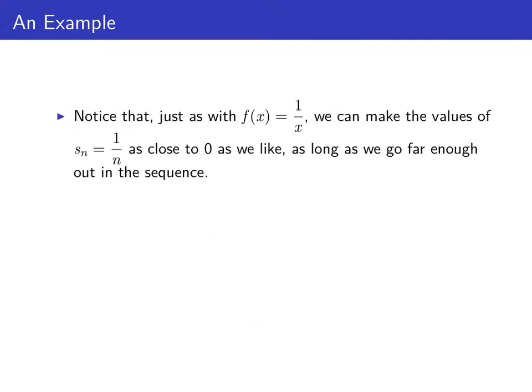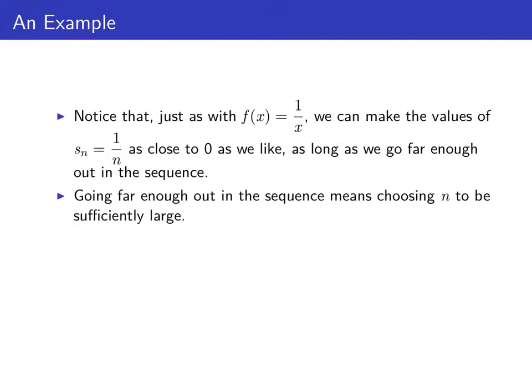And notice that, just as with f(x) = 1 over x, we can make all the values in our sequence, 1 over n, as close to 0 as we like, as long as we go far enough out in the sequence. And going far enough out in the sequence means choosing n to be as large as we need.